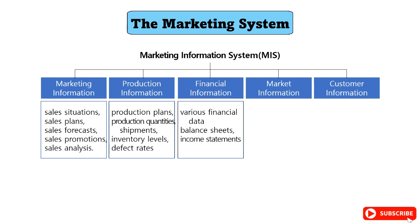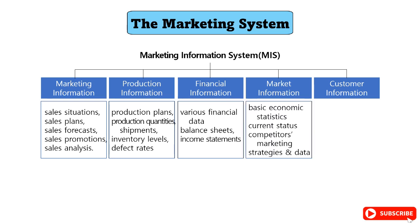The financial information includes various financial data such as balance sheets and income statements. The market information includes basic economic statistics such as GDP and inflation, as well as information on the current status and sales of competing products, competitors' marketing strategies, data collected from suppliers or distributors, and confidential information.